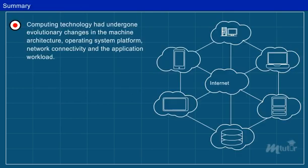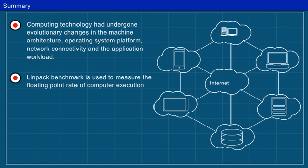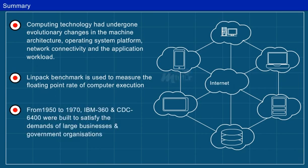Summary: Computing technology has undergone evolutionary changes in machine architecture, operating system platform, network connectivity and application workload. The Linpack benchmark is used to measure the floating-point rate of computer execution. From 1950 to 1970, a handful of mainframes, including the IBM 360 and CDC 6400, i.e., Control Data Corporation, were built to satisfy the demands of large businesses and government organizations.